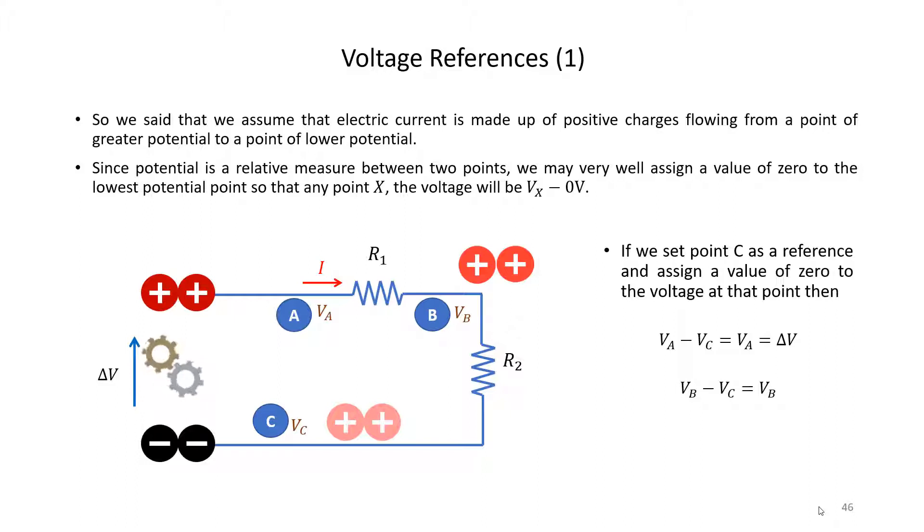We mentioned that the fact that we have a battery which maintains a constant voltage across its terminals means that we have a constant current going through the two resistances, and the value of the voltage at different points along the circuit will remain constant as well.